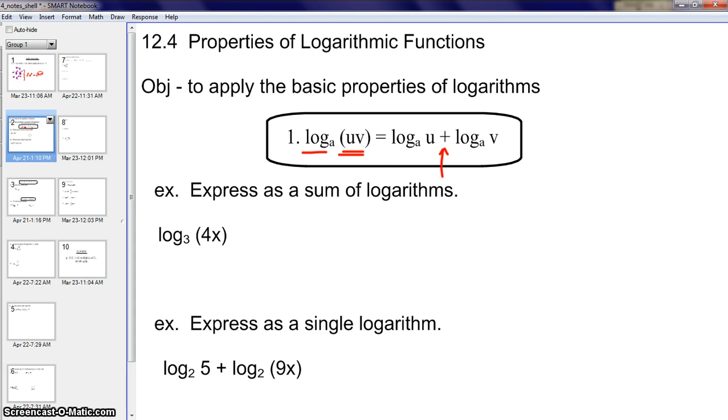So the first example here says to express the following as a sum of logarithms. We will apply this rule in a very straightforward way. The 4 and the x are like the u and the v up above. So this is the base 3 log of 4 plus the base 3 log of x.